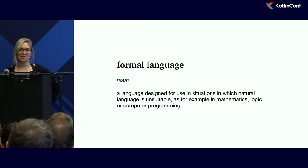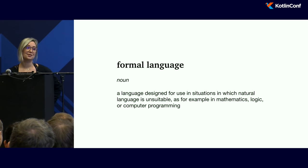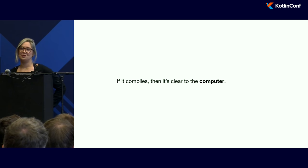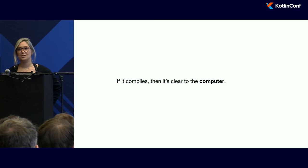We have to find a balance between the computer's language and our language. For computers, we use a formal language — one designed to be precise and unambiguous, for situations where natural language is unsuitable, like computer programming. With Kotlin, if it compiles, then it's clear to the computer. It may not do what you intended, but you've given the computer unambiguous instructions, and you can use testing to verify the result.